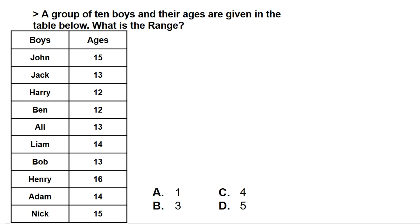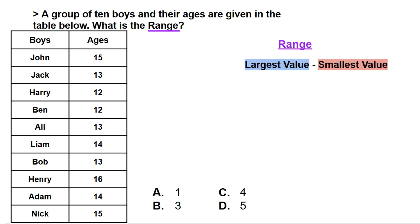In this question, we are asked what is the range. The range is the largest value subtracted by the smallest value. The largest value in our table is 16 and the smallest value is 12. If we subtract 12 from 16, we get 4, making our answer C.